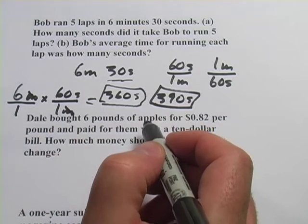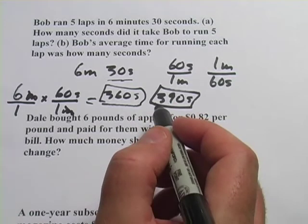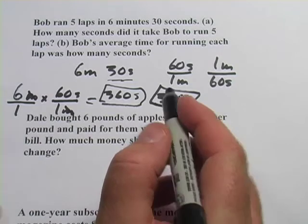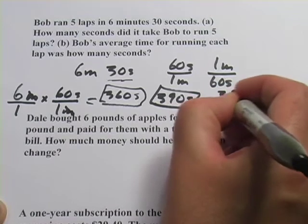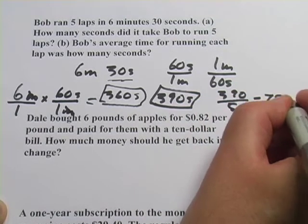If we want to find out his average time for a lap, all we have to do is divide this by the number of laps. So it's 390 divided by five. And if you do that on your calculator, 390 divided by five comes out to 78 seconds.